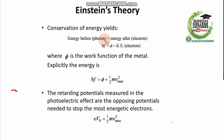This is Einstein's theory, which we have already discussed. This is the incident photon energy, and this is the required energy of the electron. If the incident energy is greater than the threshold energy, the remaining energy will be converted into the electron's kinetic energy, which can produce the photocurrent. We can write the kinetic energy as KE = ½mv².